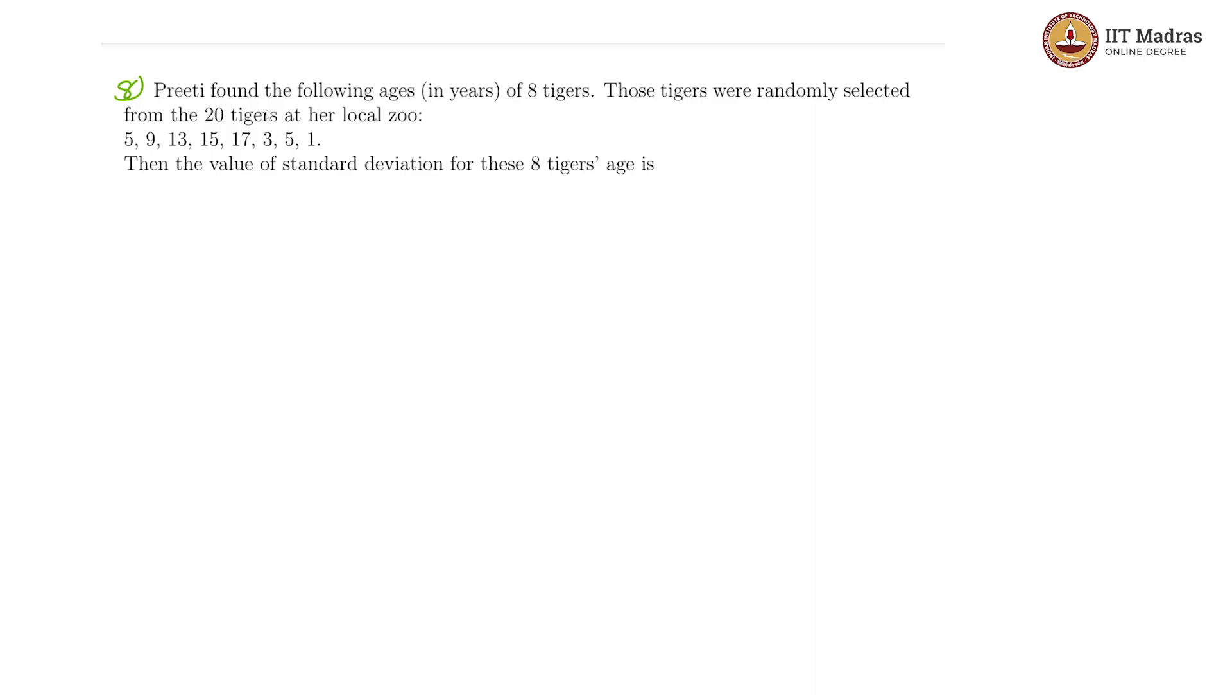For our eighth question, Preeti found the following ages of eight tigers. These are the eight ages Preeti has found. They were selected randomly from 20 tigers at her local zoo, and the value of the standard deviation is being asked.